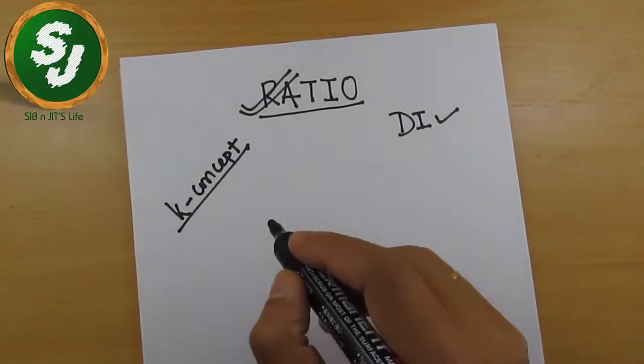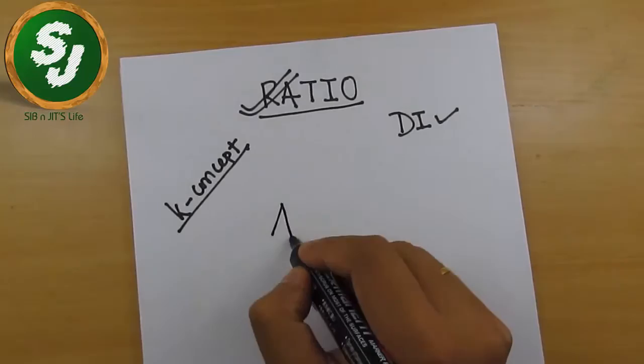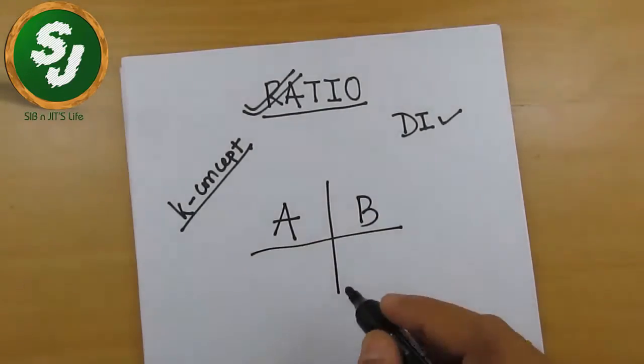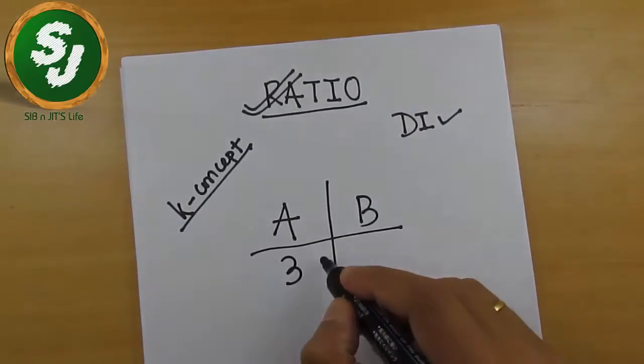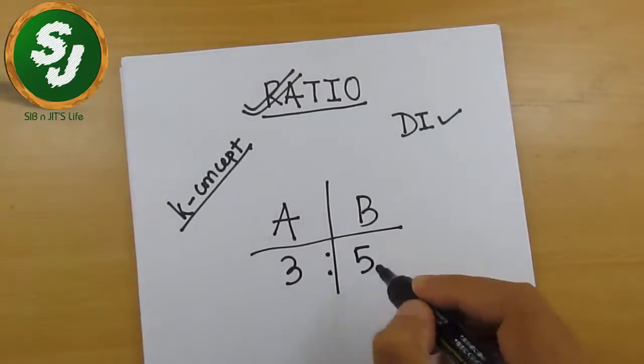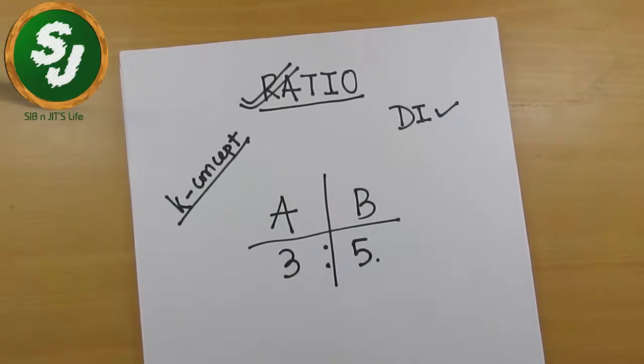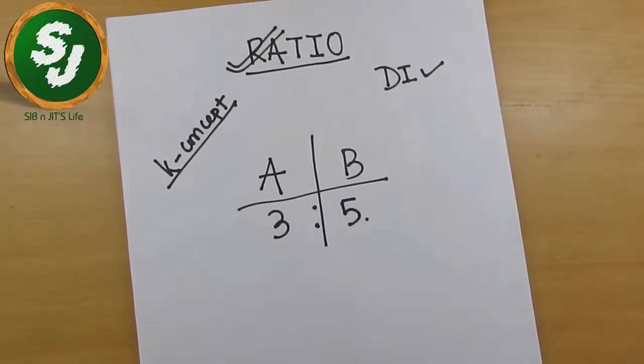For example, if I say that there are two friends A and B, and the amount of money they have is in the ratio 3 is to 5. So here my first question to you is I'm going to ask you like, how much money does A have? So to answer this question, we will get into the concepts in detail, then we will try to understand it.